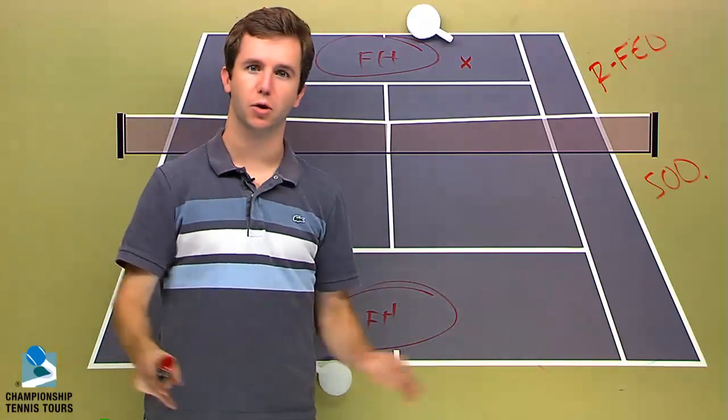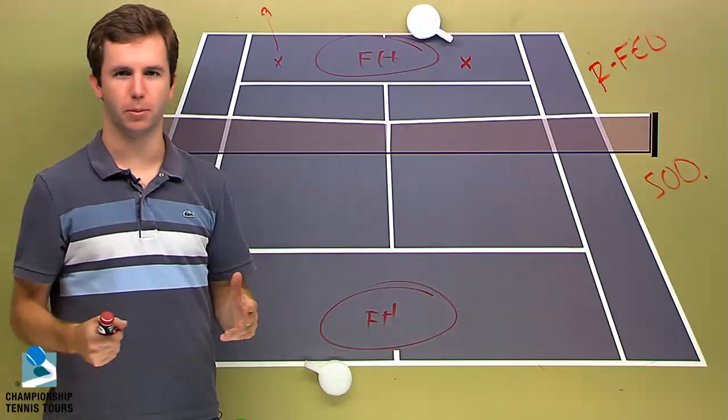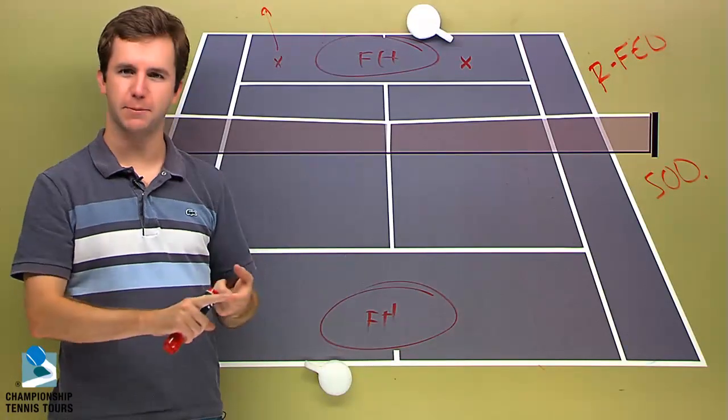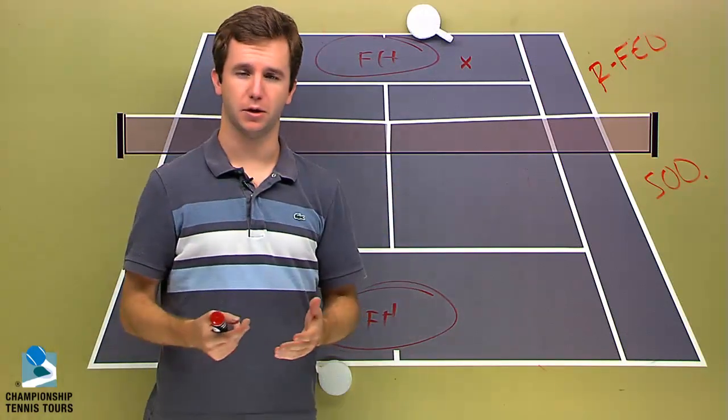Soderling's got big, long strokes and when he's set up and prepared and he can get through his mechanics, he can absolutely crush the ball. So obviously Federer wants to keep him off balance and he doesn't want him to be set up taking huge cuts at the ball.